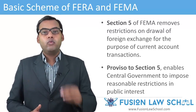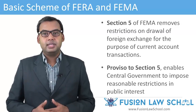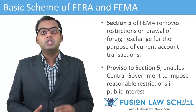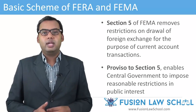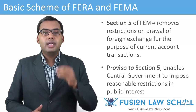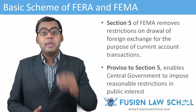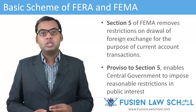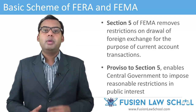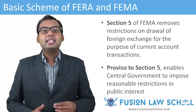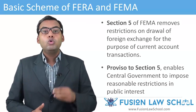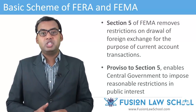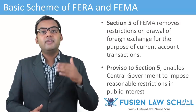The need to remove restrictions on current account transactions was necessitated as the country gave notice to the IMF in August 1994 that it had attained Article 8 status. This notice meant that no restrictions will be imposed on remittances of foreign exchange on account of current account transactions. Section 5, however, contains a proviso that the central government may, in public interest and in consultation with the Reserve Bank, impose such reasonable restrictions for current account transactions as may be prescribed — an enabling provision in case the situation warrants, such as a foreign exchange crisis in the future.